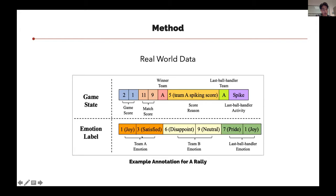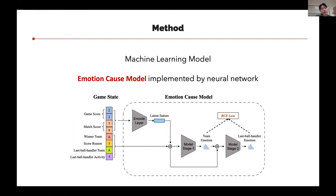We annotated two possible emotion labels for each team and for the last ball handler. We specifically annotate the last ball handler because he or she is the player closest to the end of the rally, so their emotion may be specific and deserves our attention. Given the annotated dataset, we designed and trained a machine learning model called the emotion cost model, implemented by a neural network, trained on the annotated data, and optimized by minimizing the binary cross-entropy loss. Once trained, this model is capable of predicting the emotion state based on the game state input.